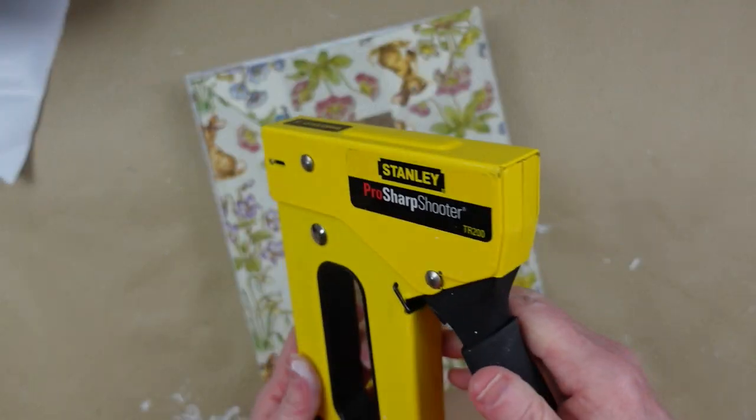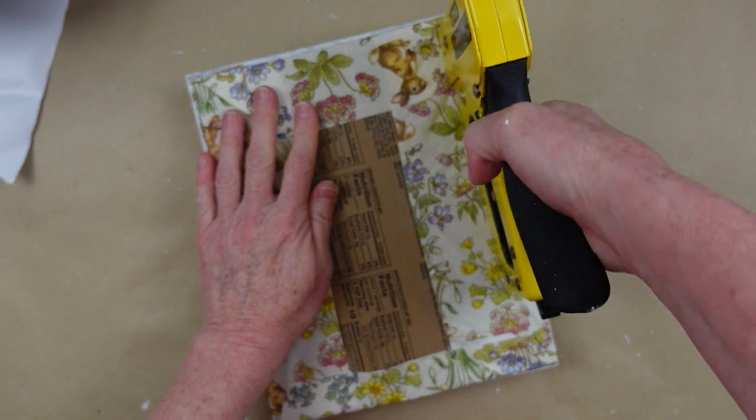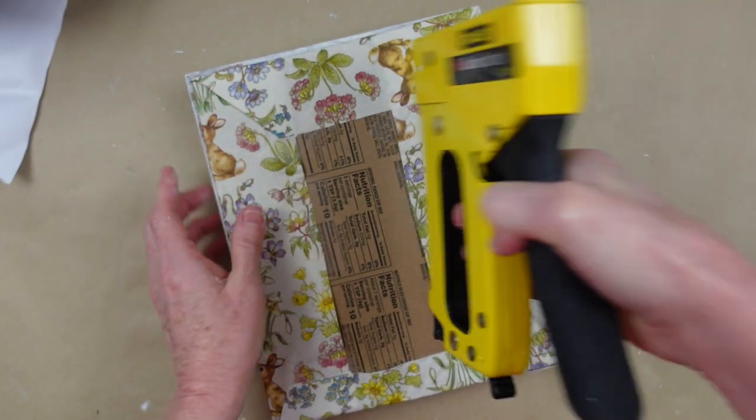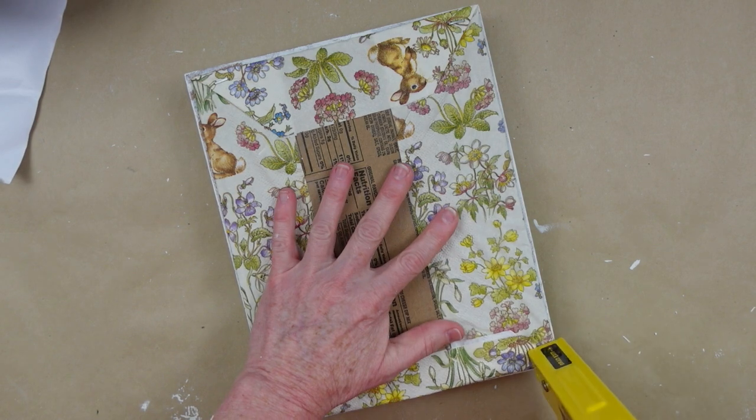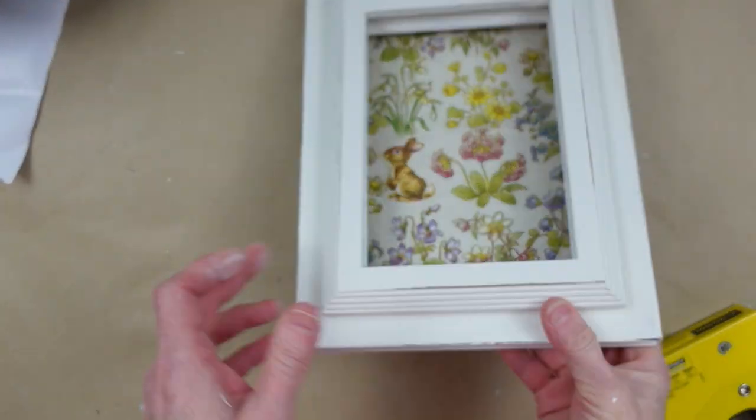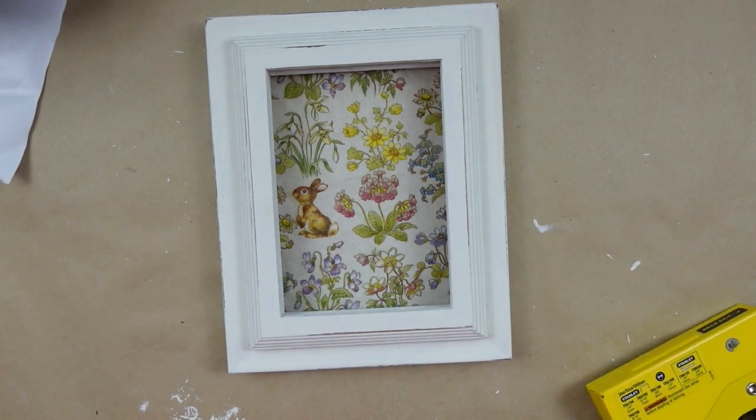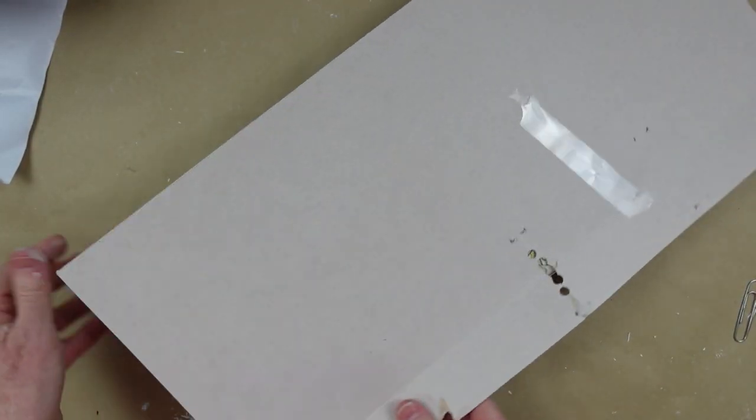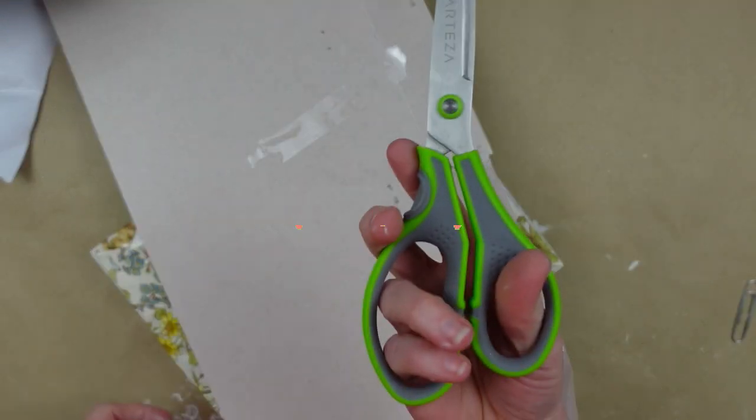Now I'm going to just use my stapler and just staple these down. I really recommend if you don't have a stapler that you get one to put in your crafting toolbox because they're very helpful. You can hot glue it if you'd like though. Now to cover it up, I'm just going to use some paper that I'm recycling.